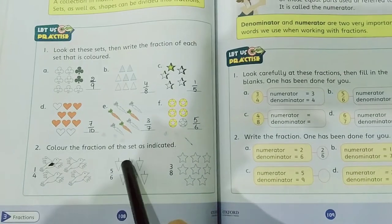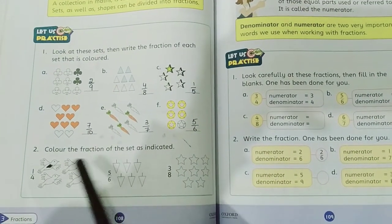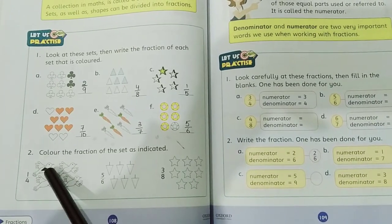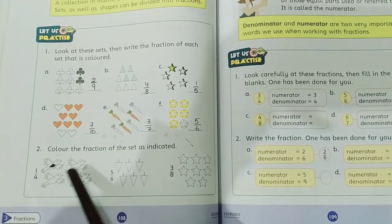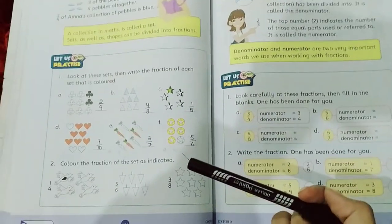Question number 2: color the fraction of the set as indicated. Just like there are fractions. We have 1 by 4 which means 1, the total is 4. Hope you all understand. Any question we will discuss in zoom lecture. Allah Hafiz students.